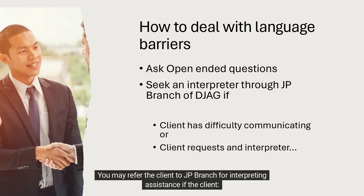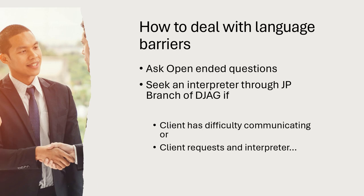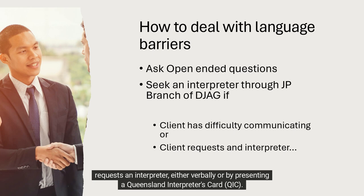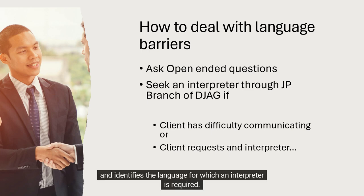You may refer the client to JP Branch for interpreting assistance if the client has difficulties communicating in English, or requests an interpreter either verbally or by presenting a Queensland Interpreter's Card (QIC). Speakers who have difficulty speaking English use the card to inform people that they require an interpreter, and it identifies the language for which an interpreter is required.